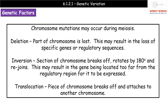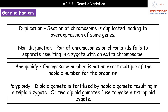Option three is translocation, where a bit of chromosome breaks off and attaches to another chromosome entirely. We then have duplication, where a section of chromosome is duplicated. If we're duplicating a piece of chromosome, we end up with an overexpression of certain genes — more copies of that gene than the organism should have.